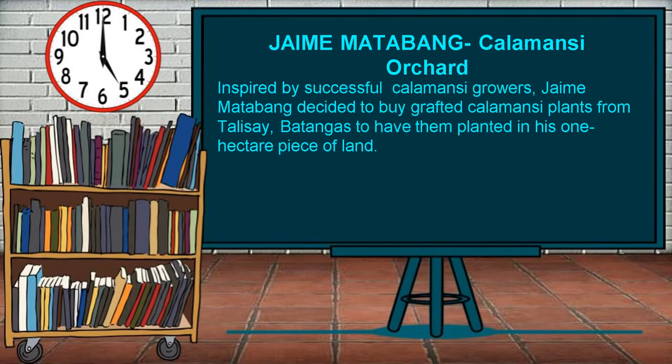Another successful orchard grower in the Philippines is Jaime Matabang. Inspired by other successful calamansi growers, Jaime Matabang decided to buy grafted calamansi plants from Talisay, Batangas to have them planted on his one-hectare piece of land. According to him, calamansi can bear fruits two to three years from planting and can be grown in four types of climates as long as there is well-distributed rainfall throughout the year. He also said that one good thing about calamansi farming is that it does not need much caring unlike other fruit-bearing trees. Aside from the usual watering and fertilizing, the calamansi crops are just sprayed once in a while, then left to grow.